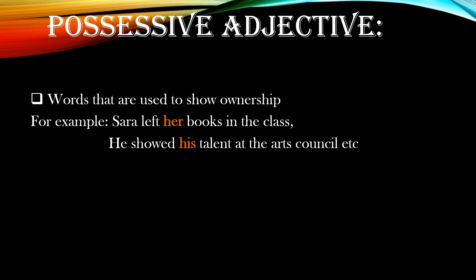The last type is possessive adjective. These words are used to show ownership. Note the word 'ownership.' For instance, 'Sarah left her books in the class' — the word her is used to show ownership of the books. Another example: 'He showed his talent at the arts council' — we place the word his before talent, which is a noun, showing that the talent is his. Therefore, words like his and her come under the umbrella of possessive adjective.